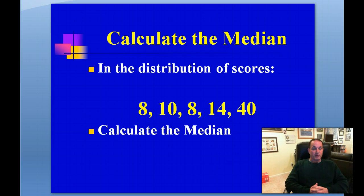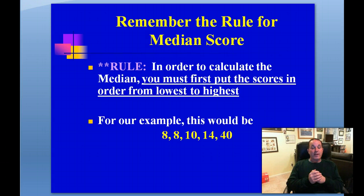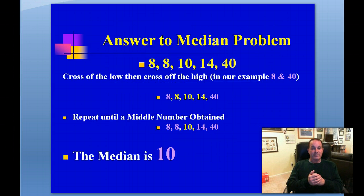Let's go back to our original distribution of scores: 8, 10, 8, 14, and 40. To calculate the median, it's very important that you first put the scores in order from lowest to highest. So our distribution becomes: 8, 8, 10, 14, and 40. We then cross off the low 8 and the high 40, then cross off the next low 8 and the next high 14. What's left in the middle is our median — and that is 10.